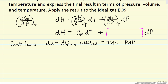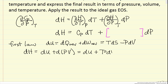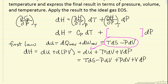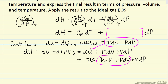What I'm going to do is write the definition of dH: dU plus d(PV), and then expand the second term as PdV plus VdP. Now I take the first law expression for dU and substitute it in. You'll notice those two PdV terms cancel, so I end up with dH equals TdS plus VdP.